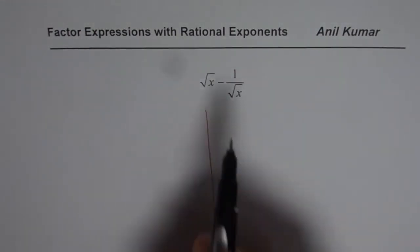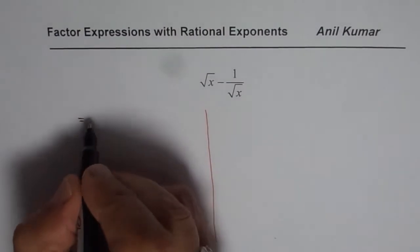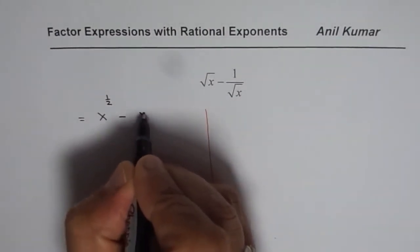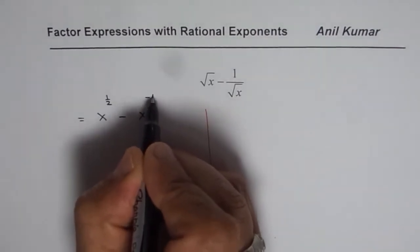Now one way to factor is that you can write this as exponent x to the power of half minus x to the power of minus half since that is in the denominator.